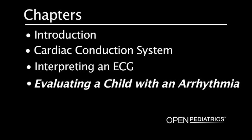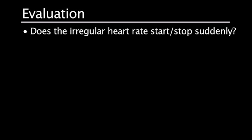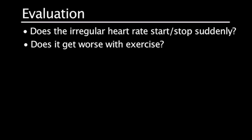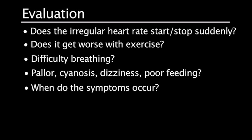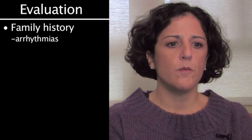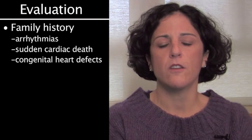Evaluating a child with an arrhythmia. General principles include first looking at the history. The history will help point you towards or away from a possible diagnosis of an arrhythmia. Questions to ask: Does the fast or slow heart rate start or stop suddenly? Does it get worse with exercise? Are there other symptoms such as difficulty breathing, pallor, cyanosis, dizziness, or poor feeding? Do these symptoms occur before, during, or after the fast or slow heart rate? What is the child's activity level — can they keep up with peers when playing or exercising? Family history is also important: are there any arrhythmias, sudden cardiac death, or congenital heart defects in any family member?